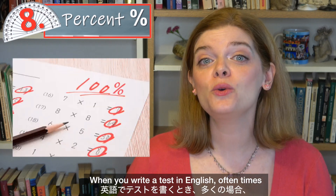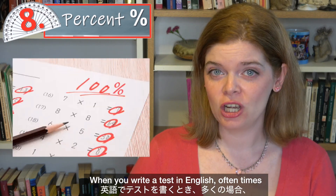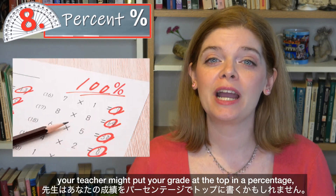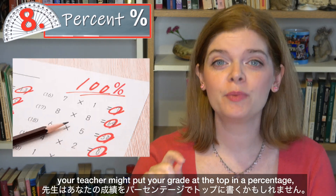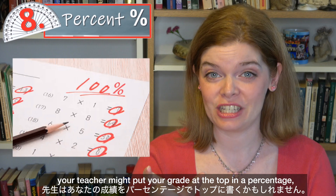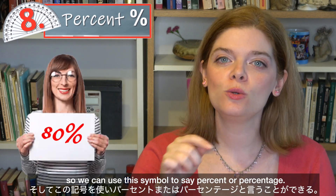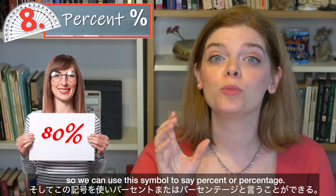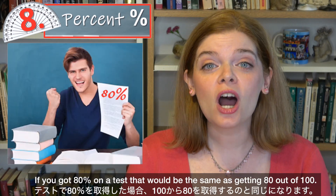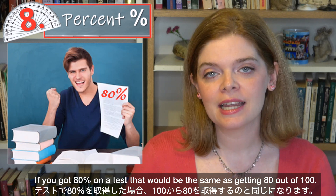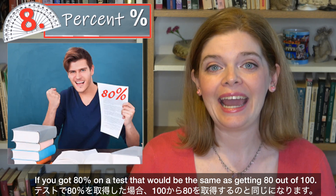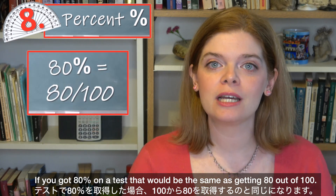When you write a test in English, oftentimes your teacher might put your grade at the top as a percentage. So we can use this symbol to say percent or percentage. If you got 80% on a test, that would be the same as getting 80 out of 100.